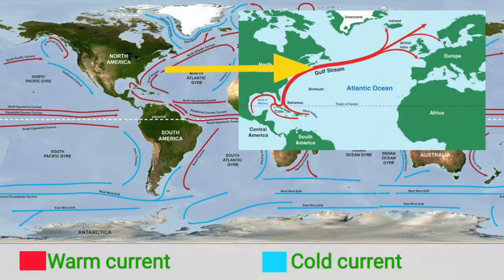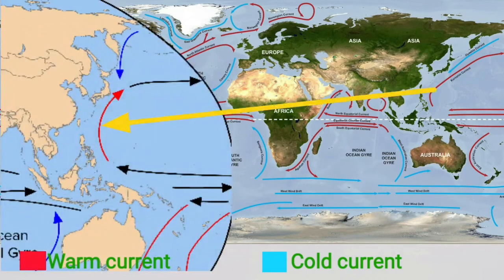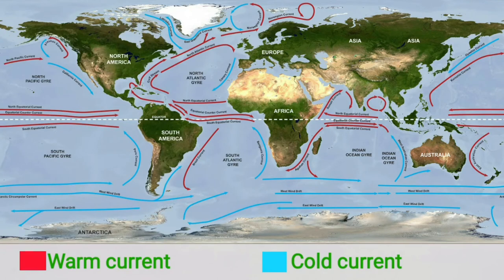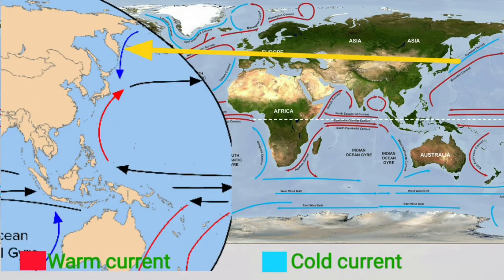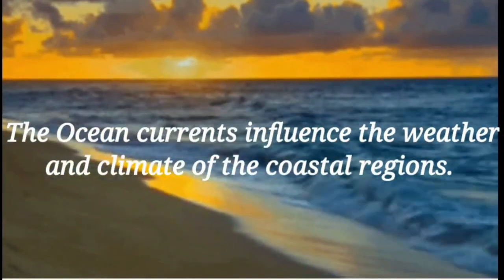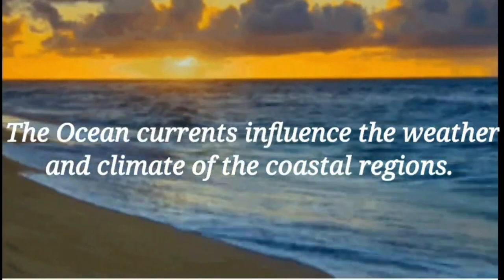The Gulf Stream current is a warm current. The Labrador current is a cold current. The Kuroshio current is a warm water current. And the Oyashio current is a cold current.